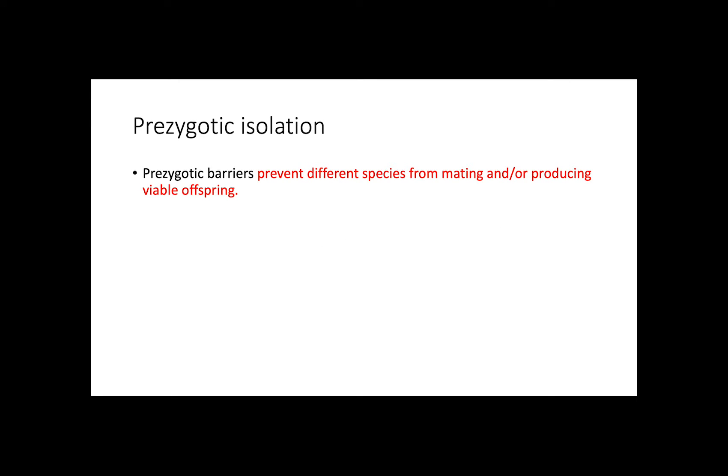This video will be about reproductive isolation mechanisms. Prezygotic barriers prevent different species from mating and or producing viable offspring. There are five major mechanisms.